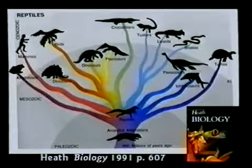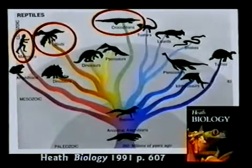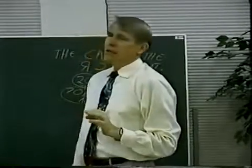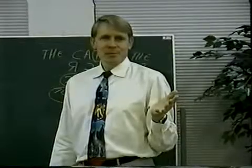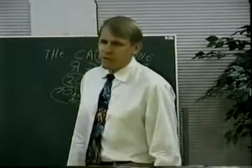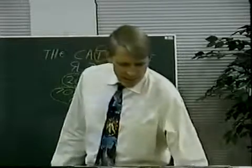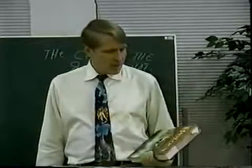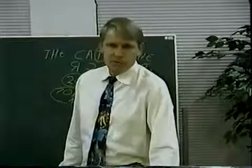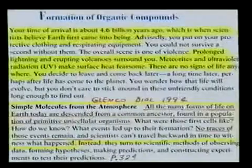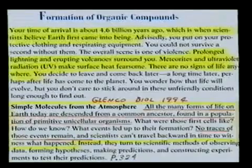Nobody has ever seen any animal produce a different kind of animal — it's never been observed. That teaching destroys the faith of children, and it's sad that so many kids go home with their faith in the scriptures destroyed because of a book that you and I paid for. The Glencoe Biology 1994 edition says: 'All the many forms of life on earth today are descended from a common ancestor found in a population of primitive unicellular organisms.'